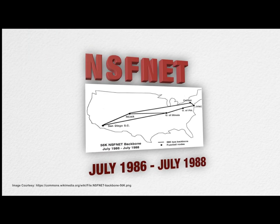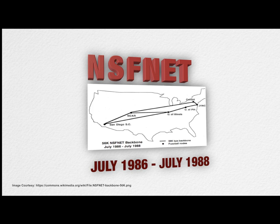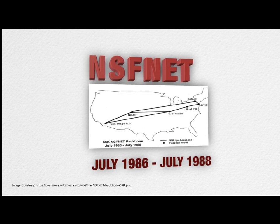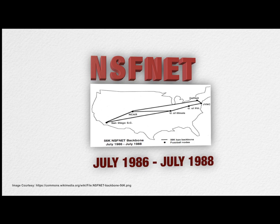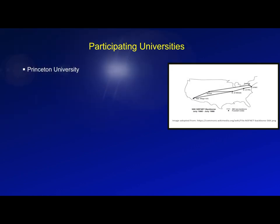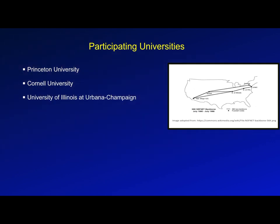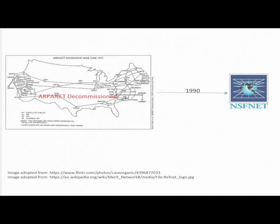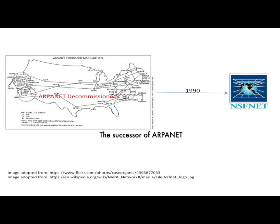Soon after, in 1986, NSF, or National Science Foundation, backbone was created and five US university computing centers were connected to form NSFnet. The participating universities were Princeton University, Cornell University, University of Illinois, Carnegie Mellon University, and General Atomics San Diego Supercomputer Center. NSFnet, the successor of ARPANET, became popular by the 1990s and ARPANET was decommissioned.